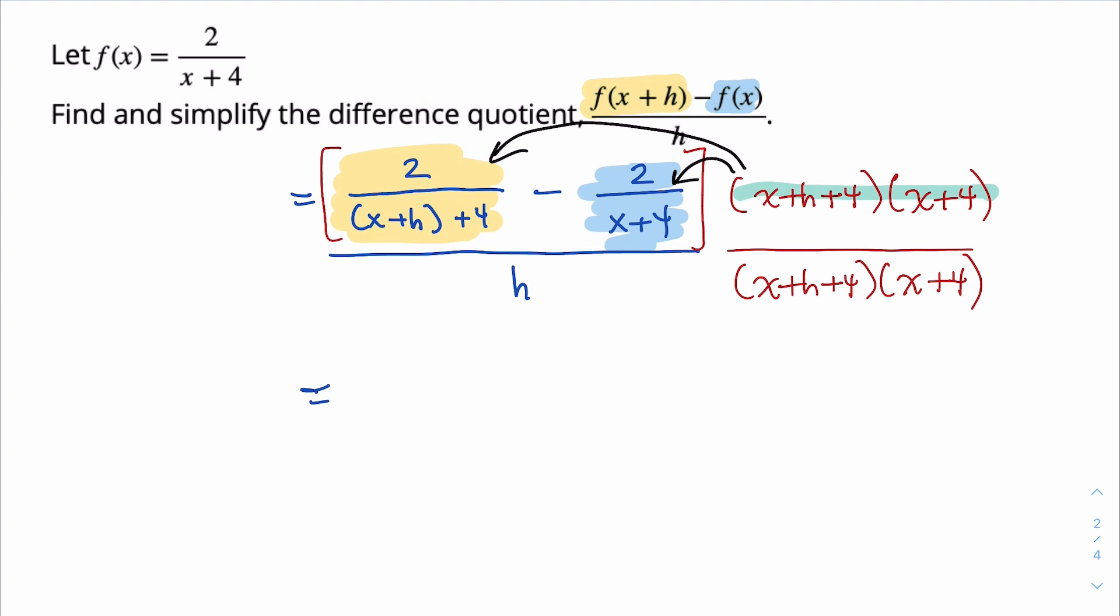and we're left with 2 times (x+4) minus, when we multiply that to the second fraction, the (x+4)s go away, and we're left with 2 times (x+h+4). And that's going to be all over...